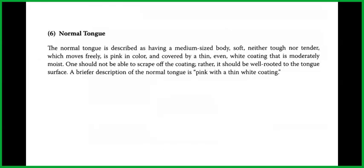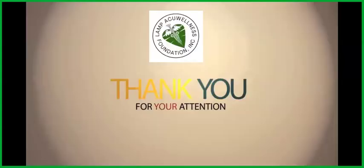The normal tongue is described as having a medium-sized body, soft — neither tough nor tender — which moves freely, is pink in color, and covered by a thin, even, white coating that is moderately moist. One should not be able to scrape off the coating; rather, it should be well-rooted to the tongue surface. A briefer description of the normal tongue is: pink with a thin, white coating.